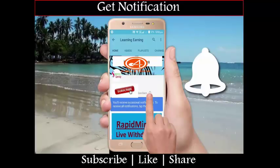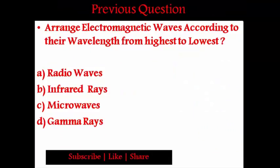Friends, here is a previous question asked in recent government exams: arrange the electromagnetic waves according to their wavelength from highest to lowest. The options are: A) Radio waves, B) Infrared rays, C) Microwaves, D) Gamma rays.